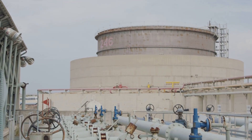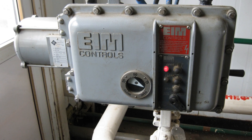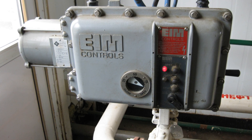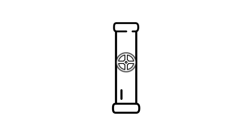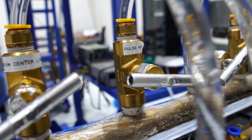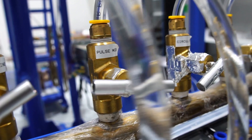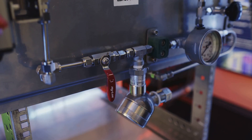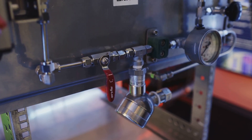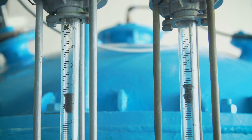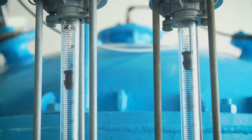The step-by-step working of a control valve: One, signal received — the control valve receives a control signal from a controller like a PLC or DCS. Two, actuator movement — the actuator moves the valve plug or disc to regulate flow. Three, flow adjustment — based on the signal, the valve opens or closes to maintain the desired pressure, flow or temperature. Four, feedback mechanism — sensors provide real-time feedback to the controller. Five, process optimization — the controller continuously adjusts the valve to maintain stable process conditions.